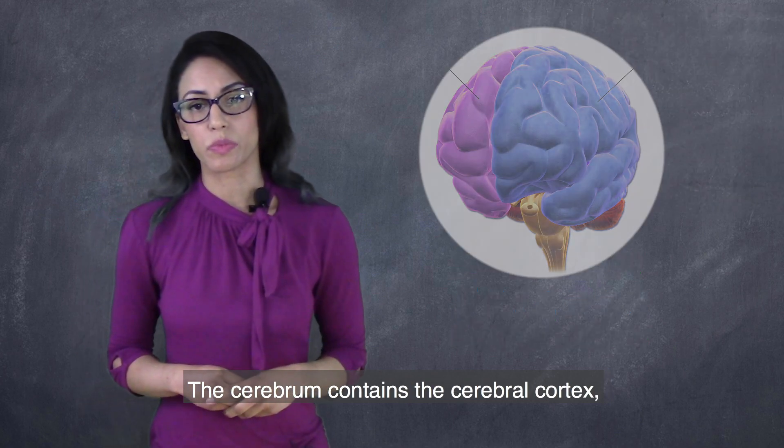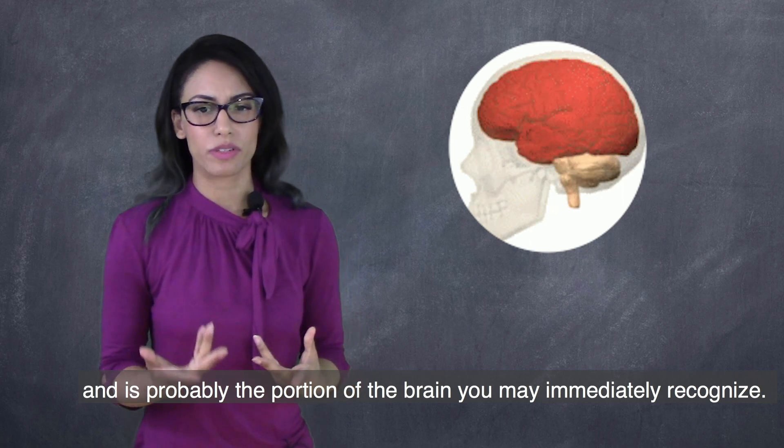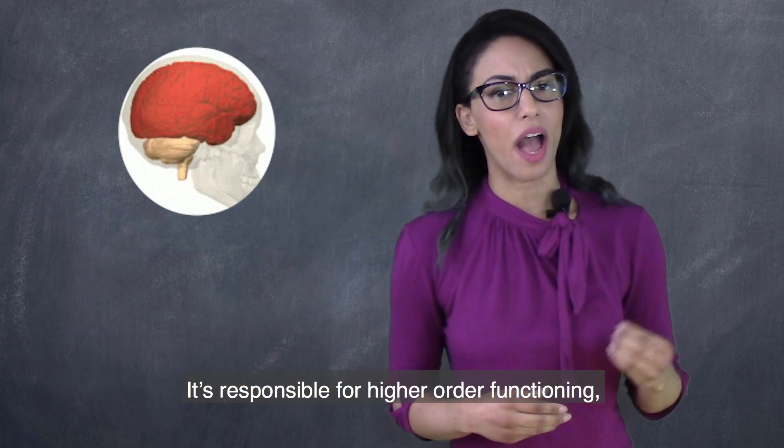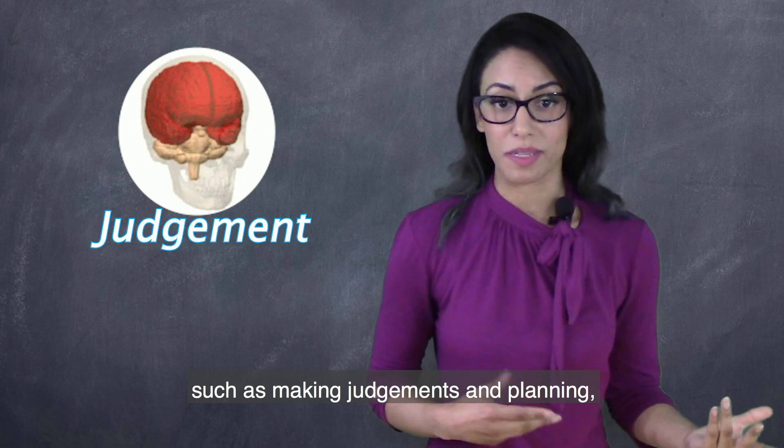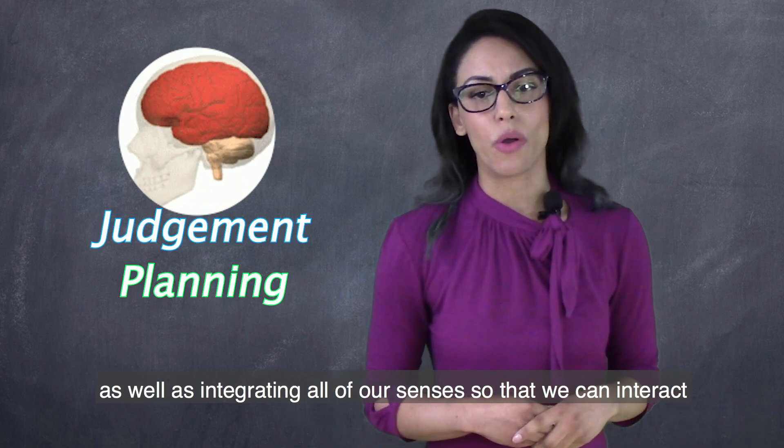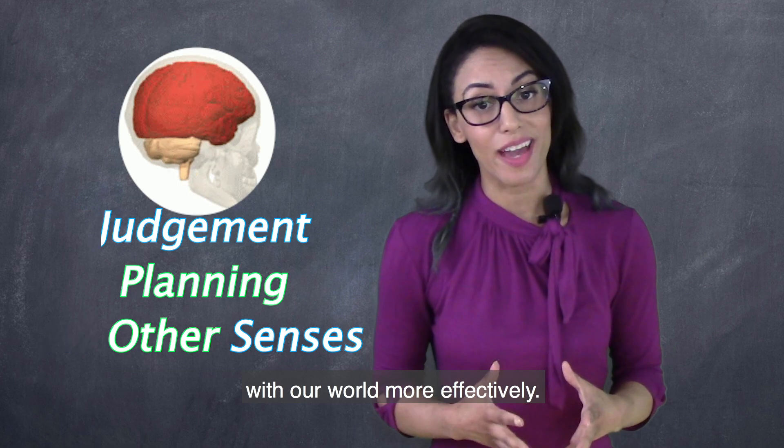The cerebrum contains the cerebral cortex and is probably the portion of the brain you may immediately recognize. It's responsible for higher-order functioning, such as making judgments and planning, as well as integrating all of our senses so that we can interact with our world more effectively.